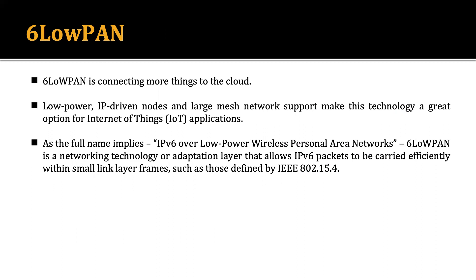This technology is a great option for Internet of Things applications. As the full name implies — IPv6 over Low Power Wireless Personal Area Network — 6LoWPAN is a networking technology or adaptation layer that allows IPv6 packets to be carried efficiently within small link-layer frames, such as those defined by IEEE 802.15.4. It merges the advantages of IPv6 and 802.15.4 into a hybrid technology suitable for IoT and low power devices.